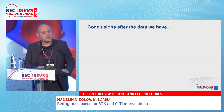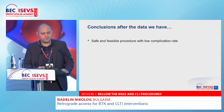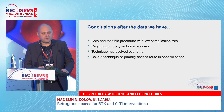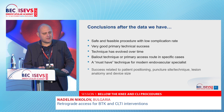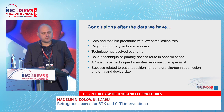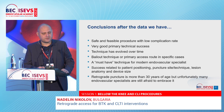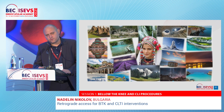In conclusion: retrograde access is a safe and feasible procedure with low complication rate and very good primary technical success as shown by the meta-analyses. The technique has evolved over time and serves as both a bailout technique and a primary access route in specific cases — a must-have technique for the modern endovascular specialist. Success relates to patient positioning, puncture site selection, lesion type, and device size. Retrograde puncture is more than 30 years old, but unfortunately many endovascular specialists are still afraid to embrace it. Thank you for your attention.